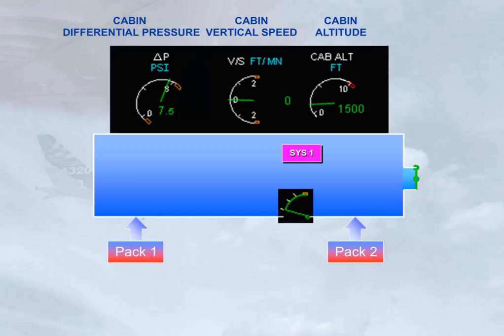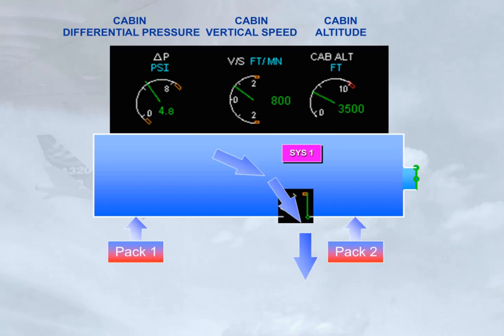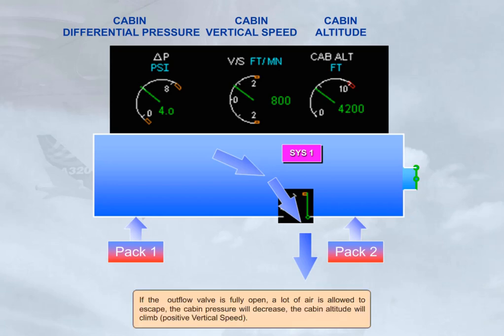If the outflow valve is fully open, a lot of air is allowed to escape. The cabin pressure will decrease, the cabin altitude will climb — positive vertical speed.